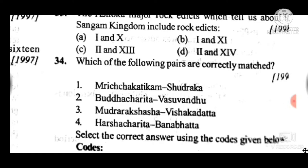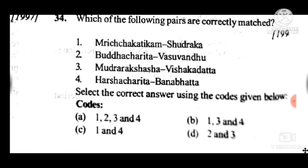Question 33: Ashoka's major rock edicts which tell us about the Sangha kingdom include — answer is C, the second and eighth rock edicts. Question 34 answer is B — one, three, and four are correctly matched; the rest are incorrect.